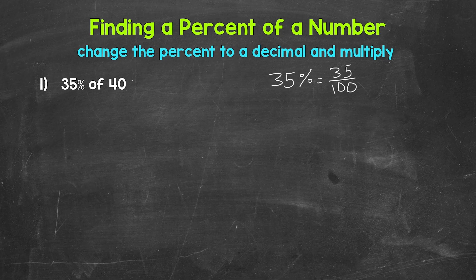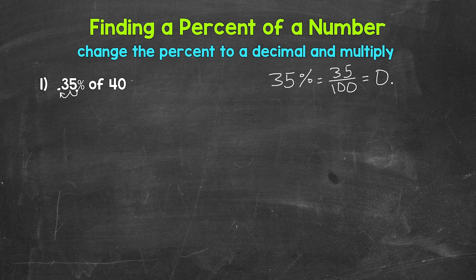The decimal comes after a whole number, so right after 35 for 35%. And we move it once, twice to the left. So we get 0.35, 35 hundredths. So 35% equals 35 over 100 as a fraction — 35 hundredths — and this equals 0.35 as a decimal, 35 hundredths. So there's our percent, fraction, and decimal.